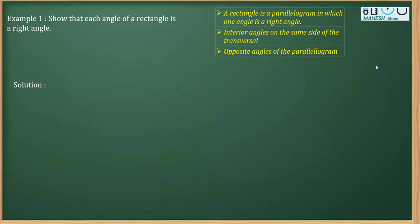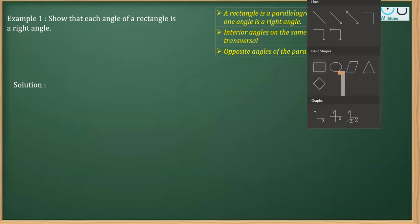Well, we are going to use this definition of a rectangle that it is a parallelogram in which one angle is 90 degree. Now, for proceeding, what we need to do is to draw a rectangle.